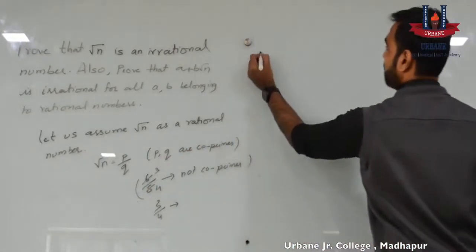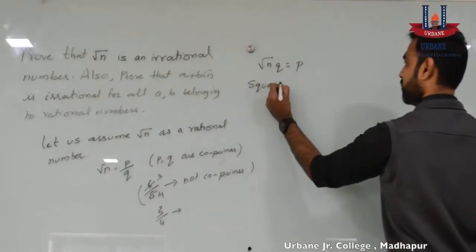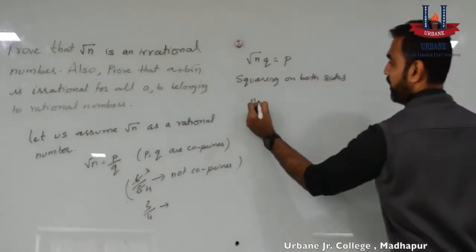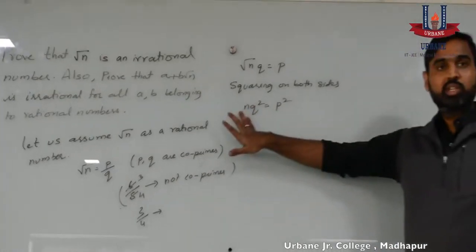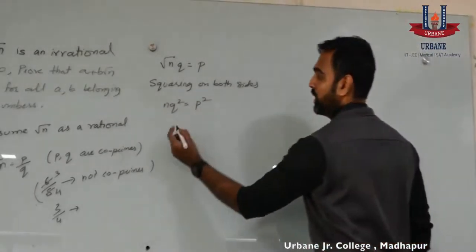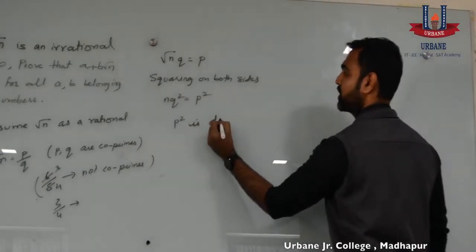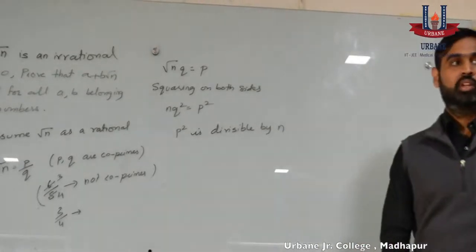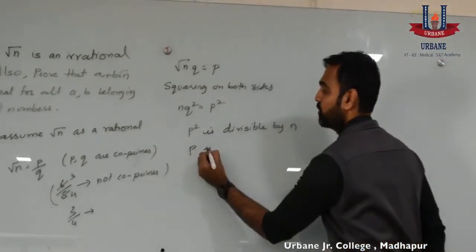Now, let us simplify this equation. Square root of n into q is equal to p. Squaring on both sides, we get n q squared is equal to p squared. Now, when they are co-primes, when you say p squared is expressed as n into q squared, we can see that p squared has a factor n, which means p squared is divisible by n. And this is true: when p squared is divisible by n, p is also divisible by n.